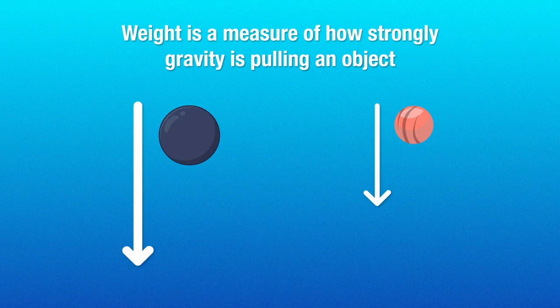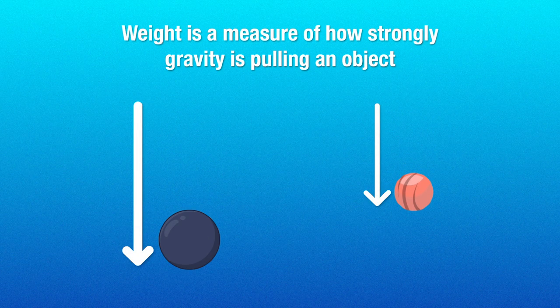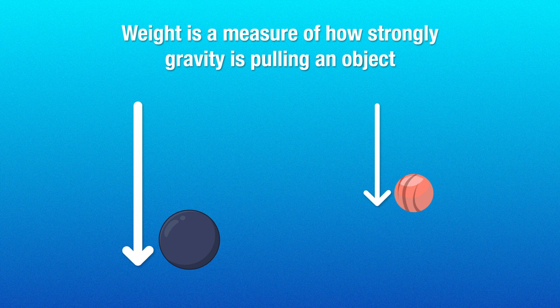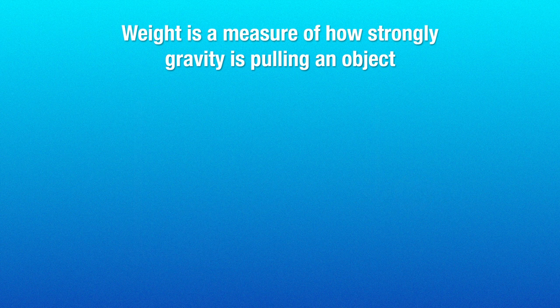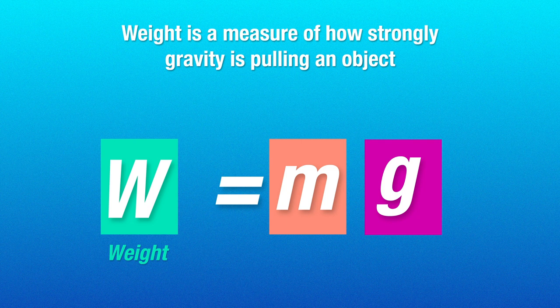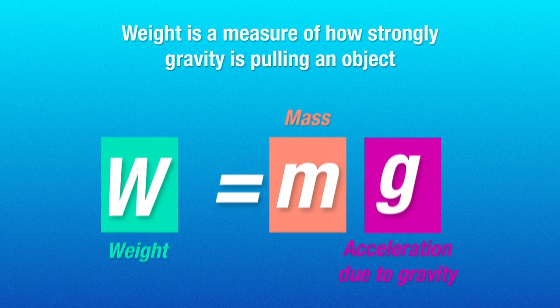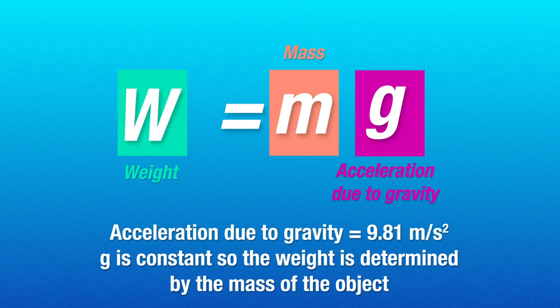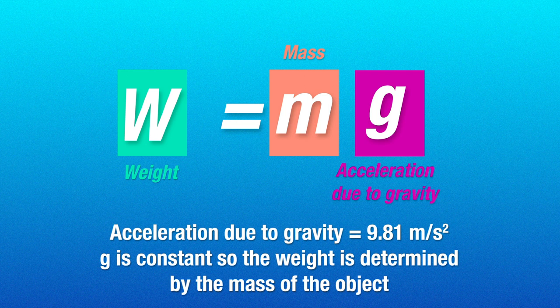In the same manner, weight pulls you downwards because weight is a measure of how strongly gravity is pulling on an object. We can calculate weight using the formula w = mg, where w is weight, m is mass, and g is the acceleration due to gravity.